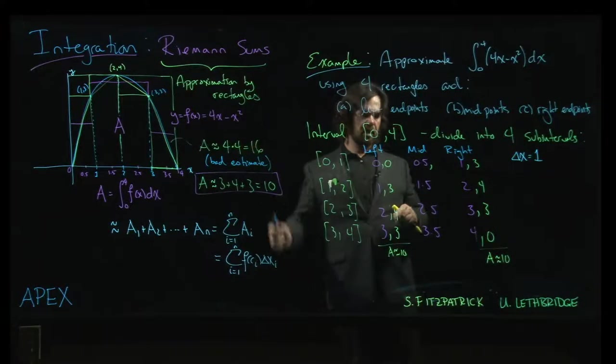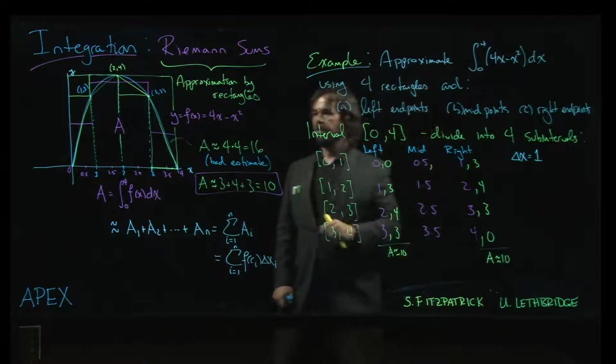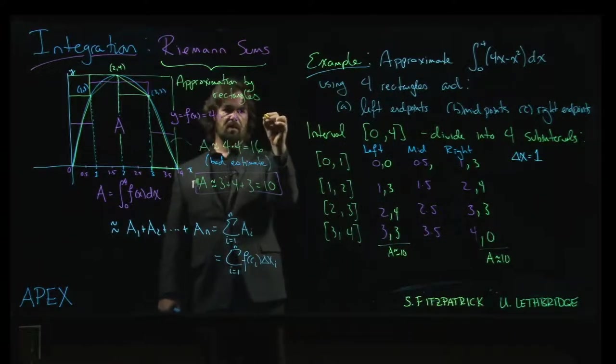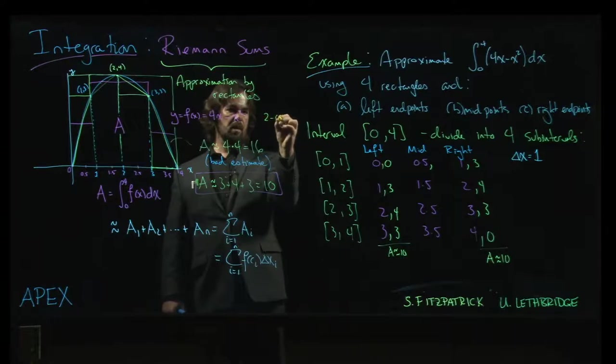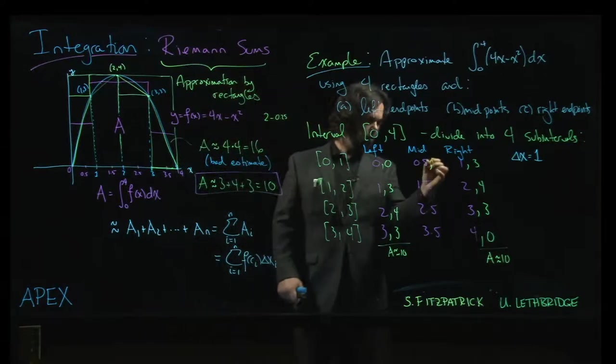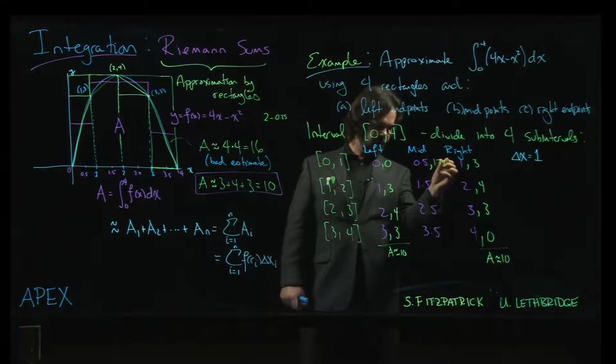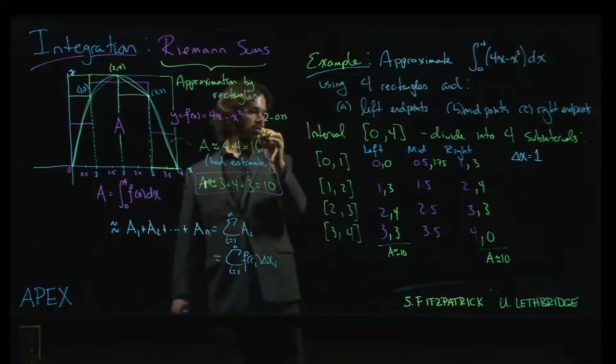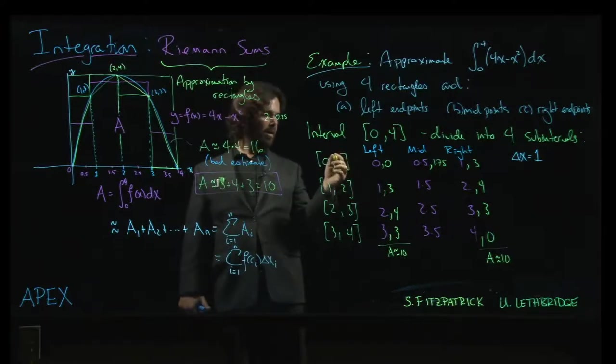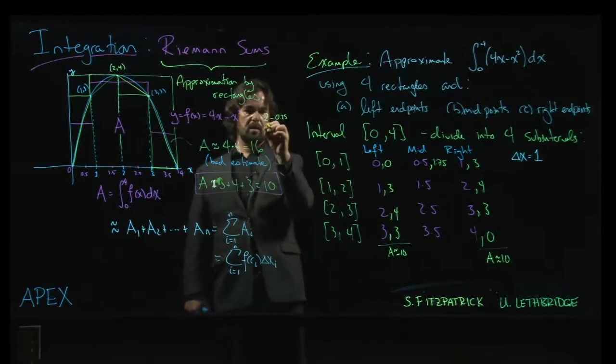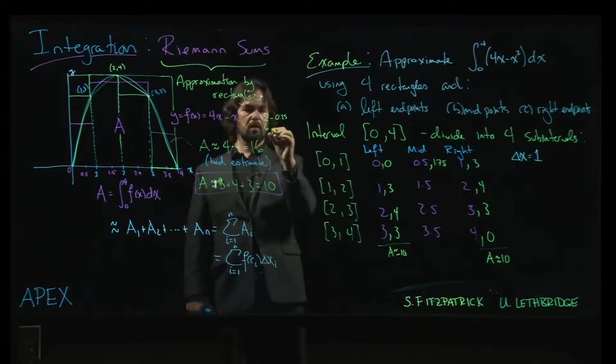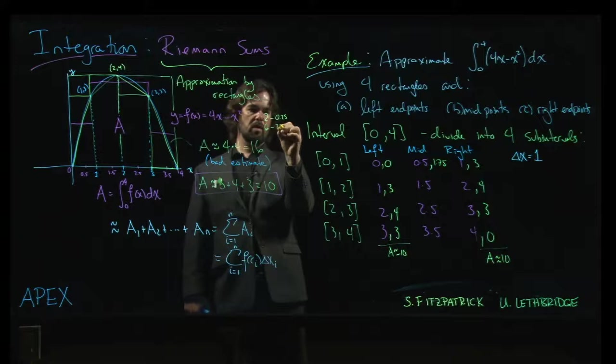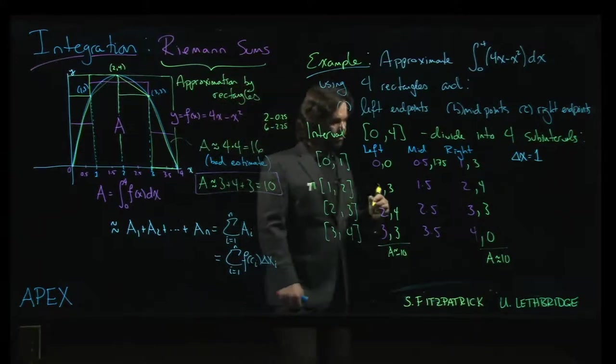Our function is here. If we're doing 0.5, that's going to be 2 times 0.5 is 2 minus 0.25, so 1.75. Then it's going to be 2 times - sorry, 4 times 1.5, which is 6. And 1.5 squared is 2.25, so that's going to give me 3.75.